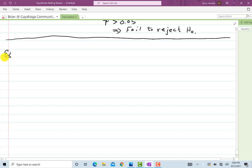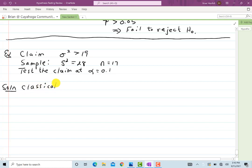Another example, the claim looks like this. The claim is sigma squared, the population variance, is greater than 19. And what is our sample? Here, the sample variance is 28. And n equals 17. And we want to test the claim at alpha equals 0.1. So first, the classical method. And for that, we try to figure out the rejection regions.